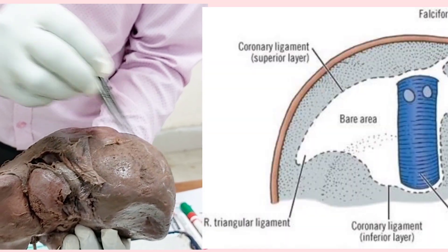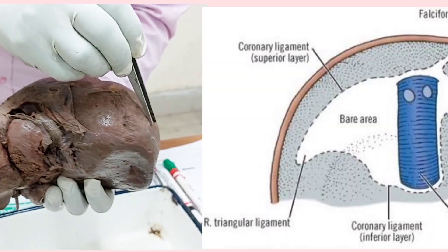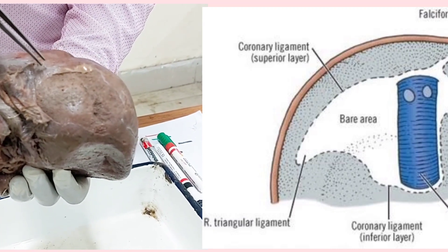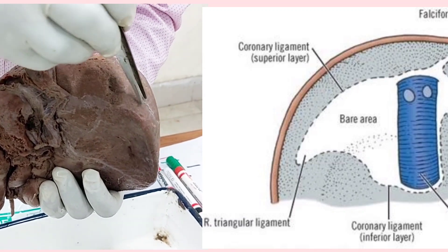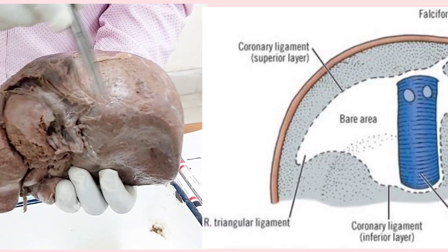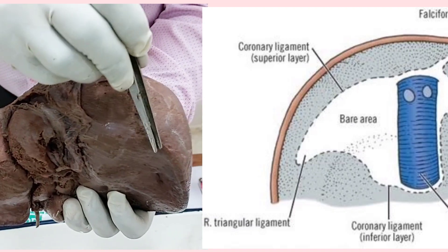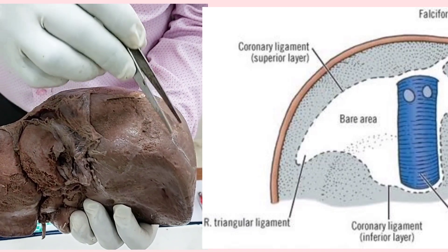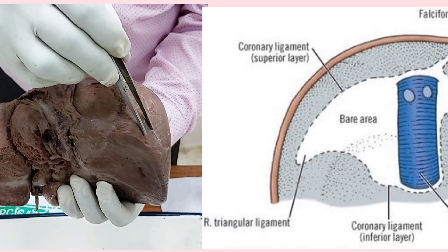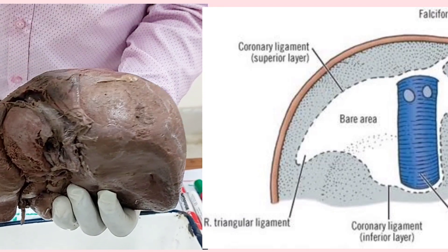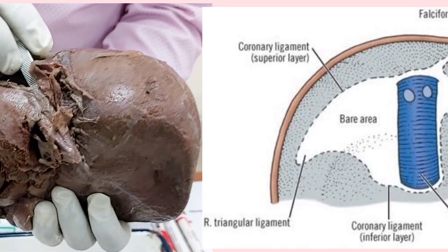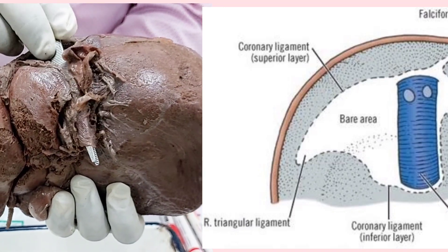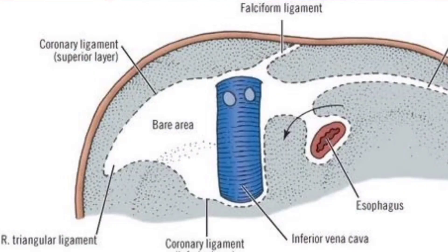The upper boundary is formed by the upper layer of the coronary ligament, which is the continuous right layer of the falciform ligament. It is bounded inferiorly by the inferior coronary ligament, which is the right layer of the lesser omentum. The apex is formed by the fusion of the upper and lower coronary ligaments, forming the right triangular ligament. The base is formed by the fossa for the inferior vena cava. So this triangular area is called the bare area of the liver.